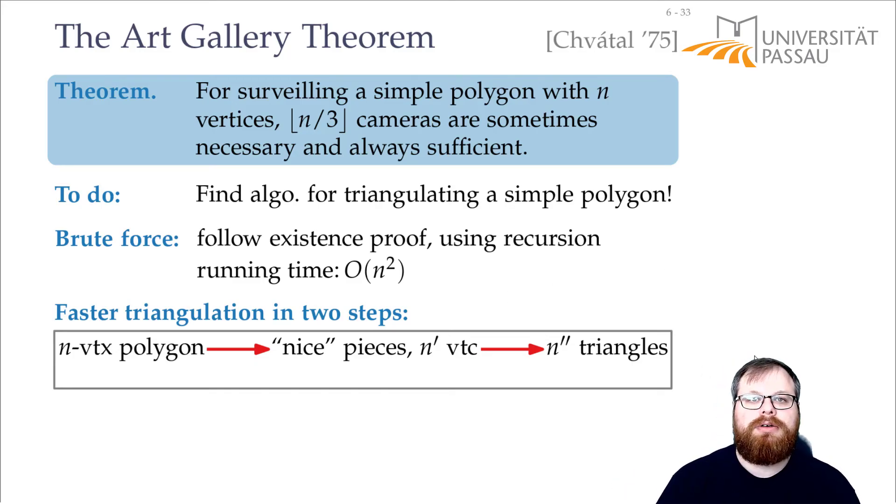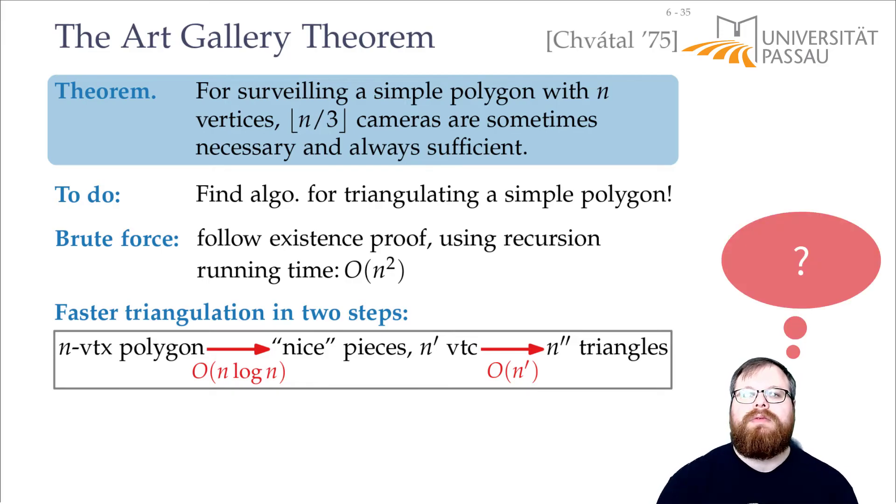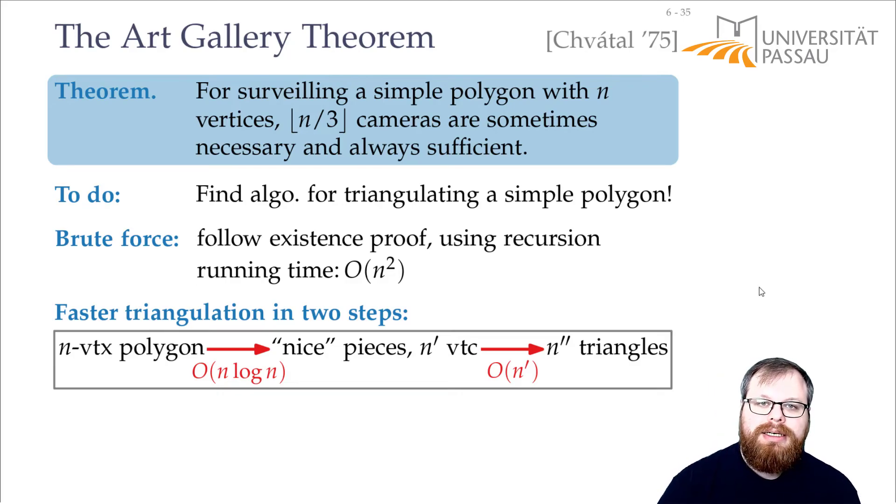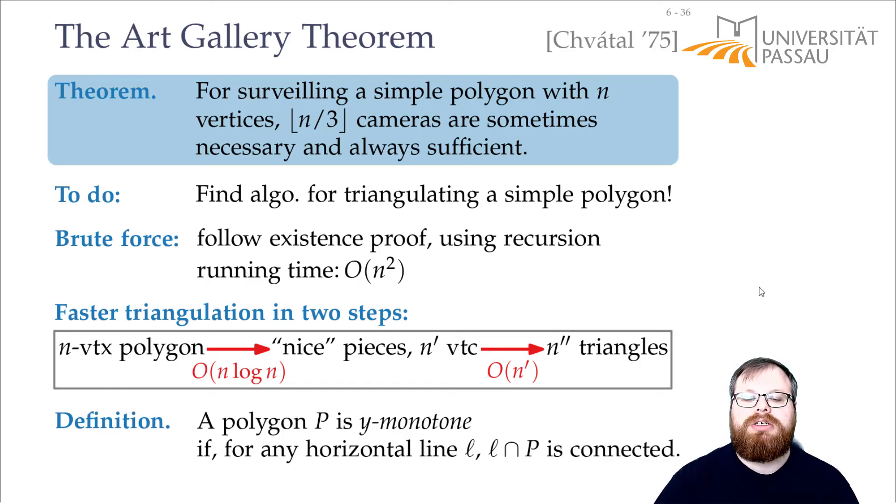And if we carefully choose how our nice pieces are supposed to look like, then this can be done easily. Our goal is to find these nice pieces in order of n log n time. And then for each of these pieces, we can, in order number of vertices it has, find the triangles. And what kind of nice pieces would you use? One way would of course be to again use convex pieces. But that's not that easy.